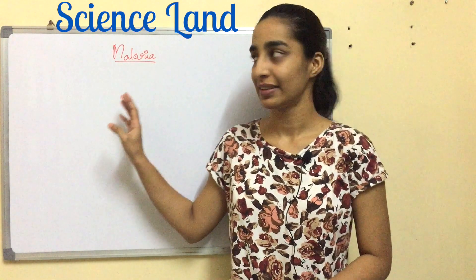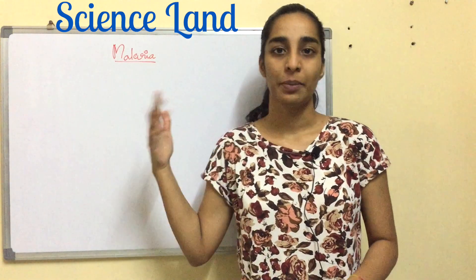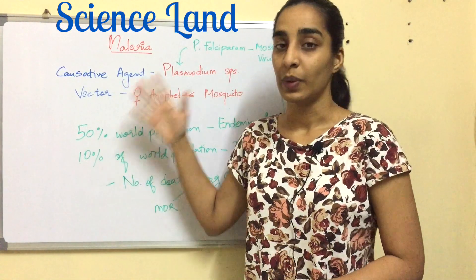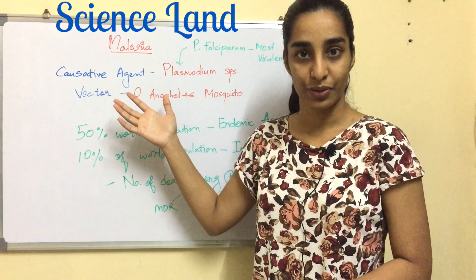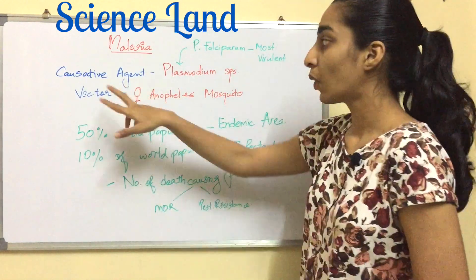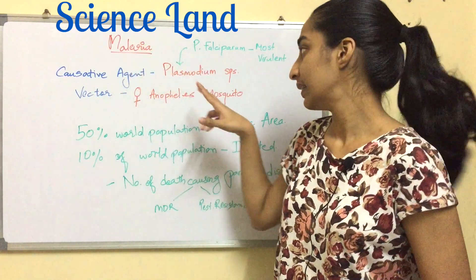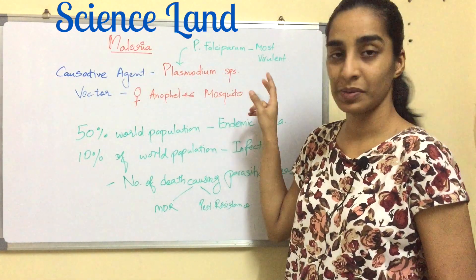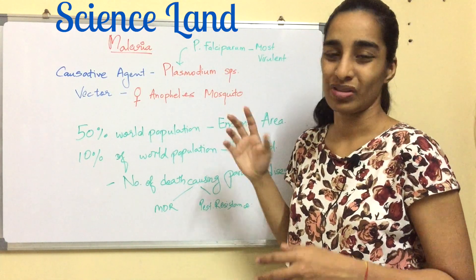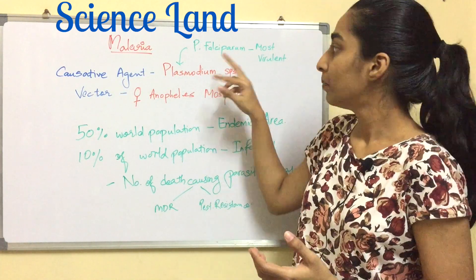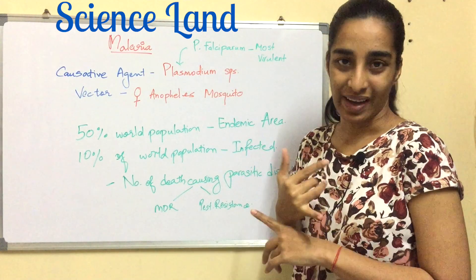Hello friends, welcome to Science Land. I am Nikita. Today I'm going to discuss malaria — it is a parasitic disease. The causative agent of malaria is Plasmodium species, which is a protozoa.